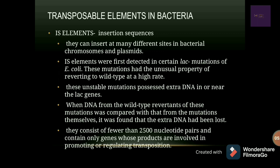When the DNA from the wild type revertants of these mutations was compared with that from the mutations themselves, it was found that the extra DNA had been lost — meaning it had jumped. IS elements consist of fewer than 2500 nucleotide pairs and contain only genes whose products are involved in either promoting or regulating transposition.